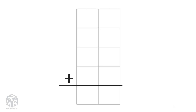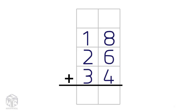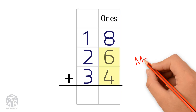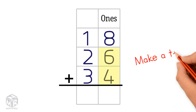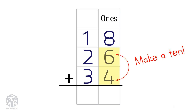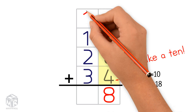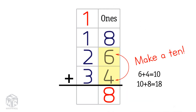Let's try another example: 18 plus 26 plus 34. We can make a 10 using 6 and 4. 6 plus 4 equals 10. 10 plus 8 equals 18. We put the 8 in the ones column and the 1 in the tens column.